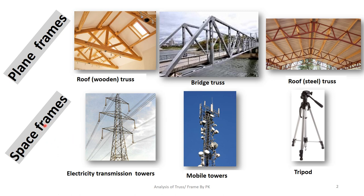Space frames are three-dimensional frames, like electricity transmission towers you see when moving outside cities, where electrical lines pass through these trusses. Mobile towers with geo-towers and air-tail towers are also examples of three-dimensional trusses. Other examples include tripods, on which we normally mount a camera.